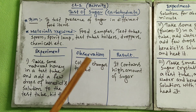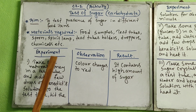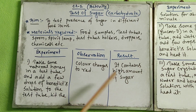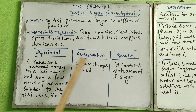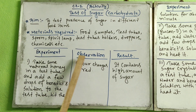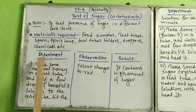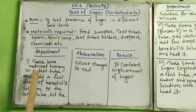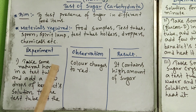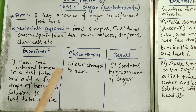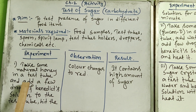You can do the experiment in the same format as the previous activity from my earlier video — column-wise with three columns: experiment, observation, and result. I have written one type of food sample, but you can try other food samples also to get different types of results.